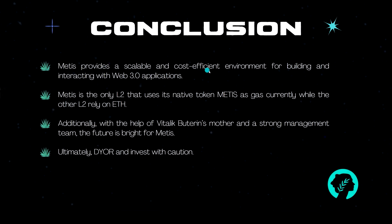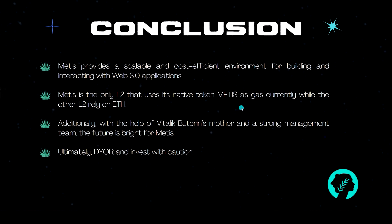In conclusion, MATIS provides a scalable and cost-efficient environment for building and interacting with Web3 applications, especially in terms of getting real businesses onboard to use on-chain tools for their actual business operations. MATIS being the only Layer 2 that uses its own native token as gas is pretty bullish on price, and with the help of Vitalik Buterin's mother promoting this ecosystem plus a strong management team, the future seems pretty good. The market cap of MATIS is currently about $500 million, which seems low for a native gas token with solid risk-reward upside potential if the ecosystem catches on. Remember to do your own research and invest with caution.